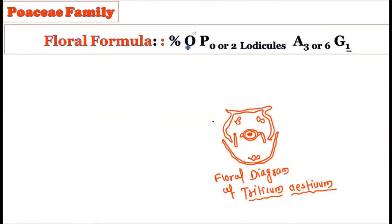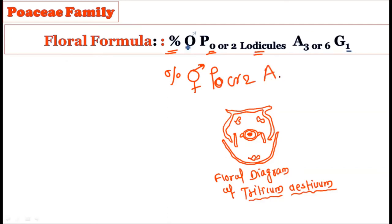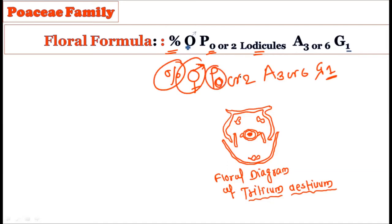The floral formula for the Poaceae family: flowers are zygomorphic (shown with that sign), mostly bisexual (sometimes unisexual). Perianth either absent or P2 (two lodicules). Androecium A3 or A6, polyandrous. Gynoecium G1 with superior ovary (underline below G1).